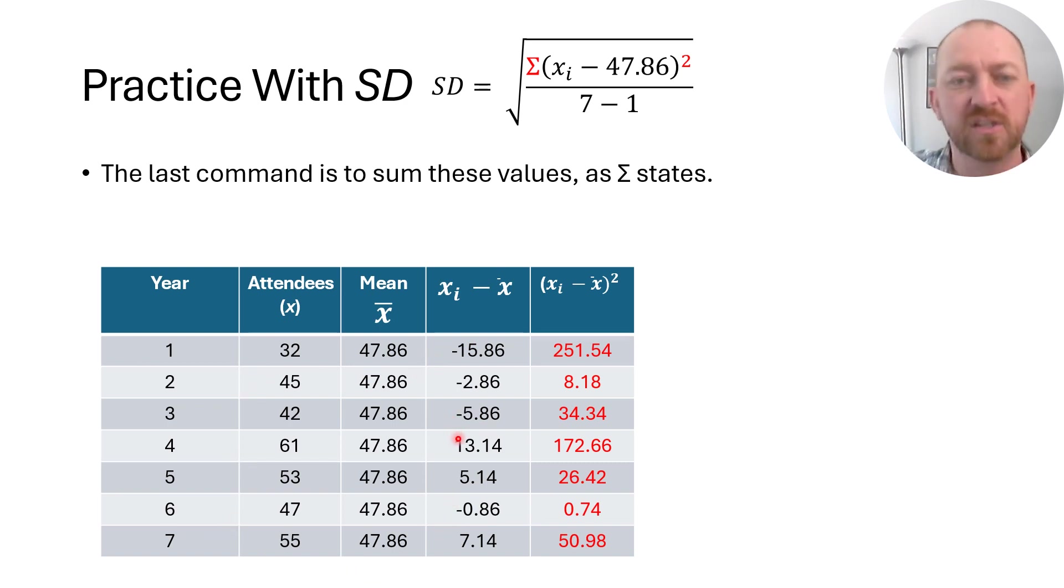However, statisticians have decided that that was maybe just a little too confusing. So they decided to square all of the values to get rid of the negatives. And then we'll take the square root at the end to undo that squaring. And that's perfectly legitimate and fine. So that's the next thing to do is that we square that value.